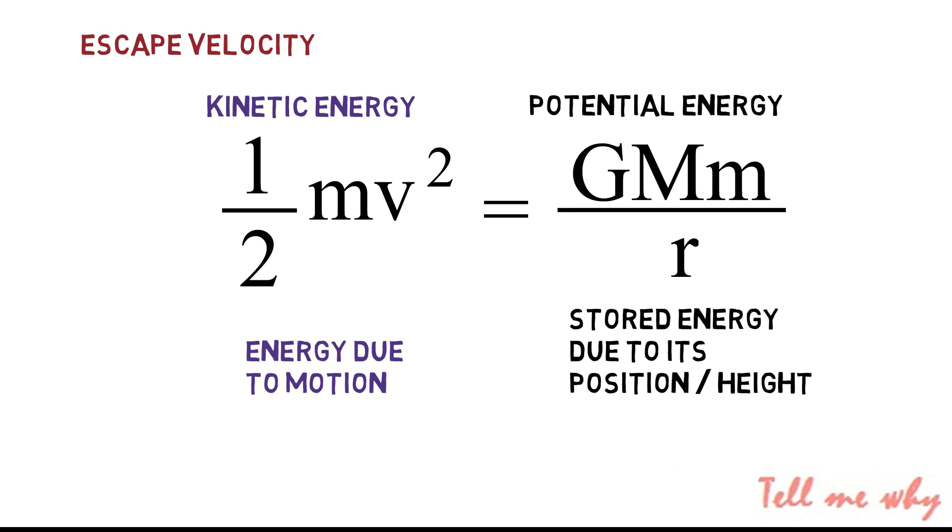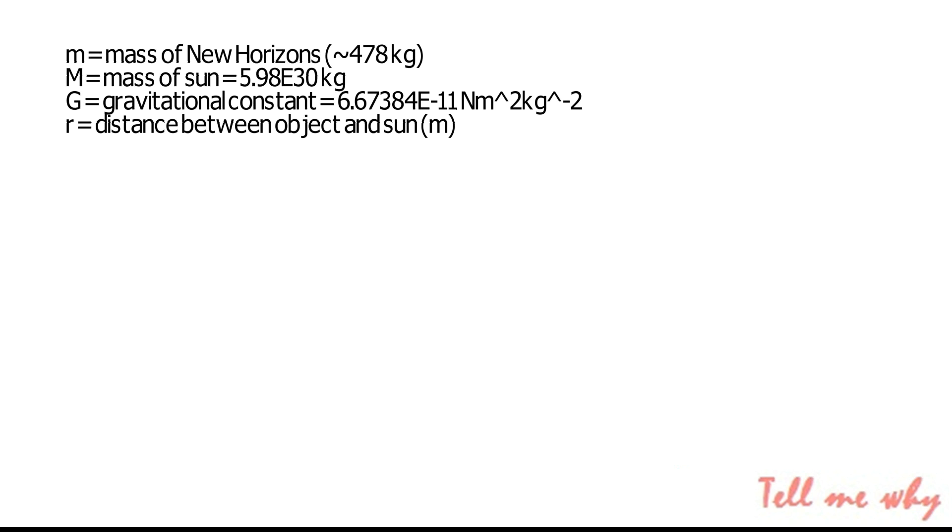The right side is the potential energy. Potential energy is defined as the energy possessed by a body by virtue of its position relative to others. So how far apart are New Horizons and the sun? Since it's the gravitational potential energy, we include the parameters relevant, such as the mass of the two objects and the gravitational constant. So our variables are this.